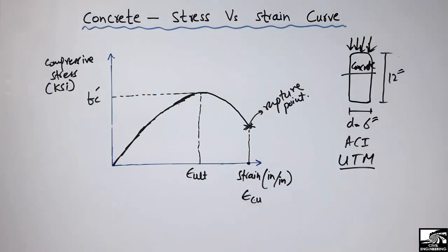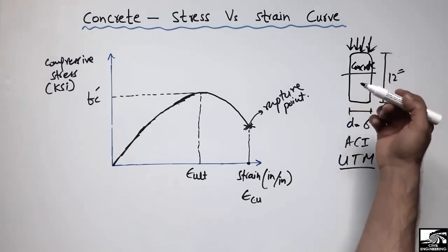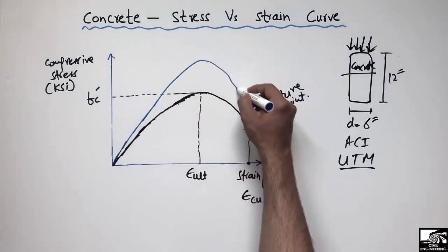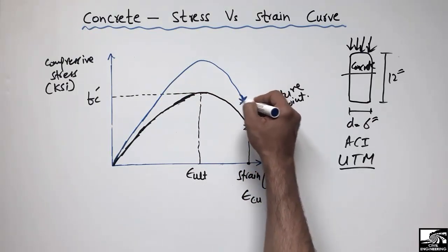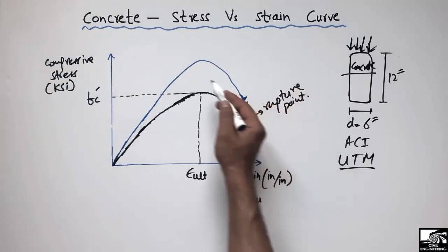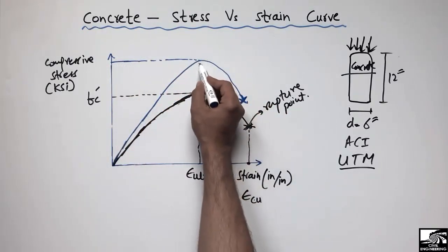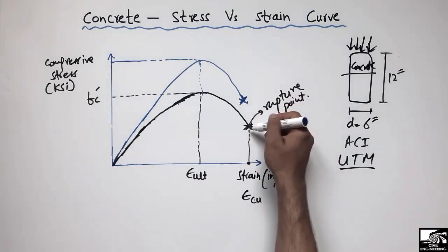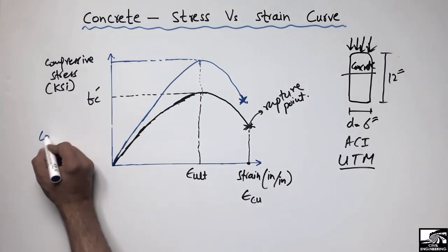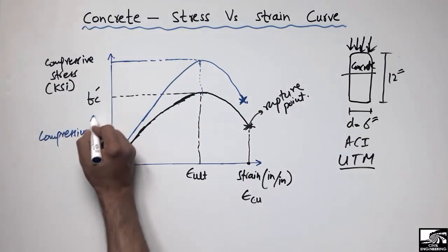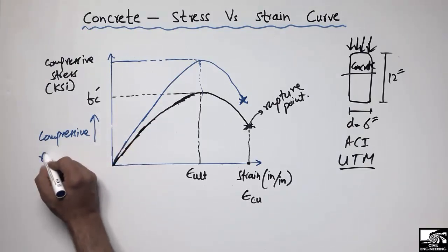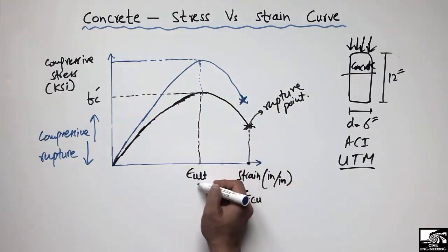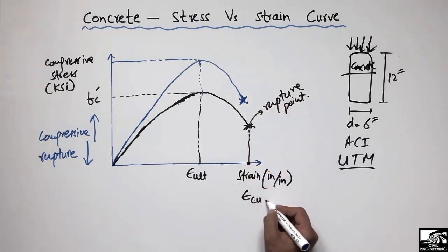Now let's suppose we have a higher-strength concrete instead of normal-strength concrete. It will show more strength, but the point of rupture will be reached sooner — that is, the rupture strain will be less compared to normal-strength concrete. So if we are increasing the compressive strength of the concrete cylinder, the rupture strain for the concrete is going to decrease, while the ultimate compressive strength increases.